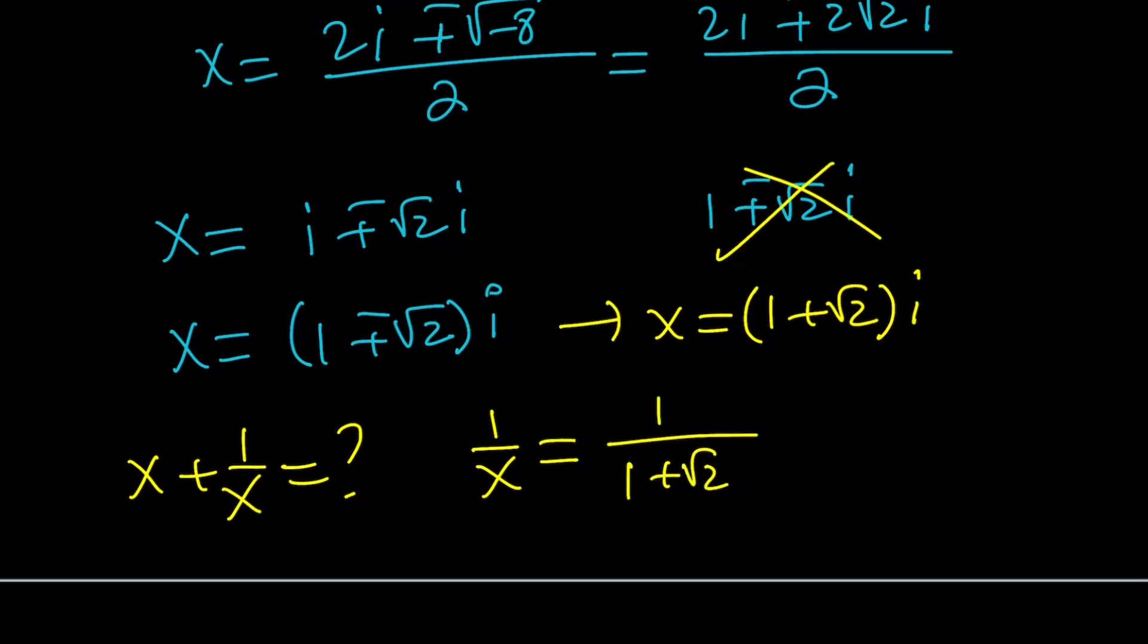And then 1 over x is just going to be the reciprocal. Now, don't get this wrong. You're not going to multiply by 1 minus root 2i, because that wouldn't be the conjugate. It's kind of like i. Think about it as i. And multiply by the conjugate of i, which is negative i, isn't it? So, multiply by negative i, multiply by negative i. Because i times negative i is negative i squared. And i squared equals negative 1. So, this is positive 1. So, we don't have to worry about these. Make sense?